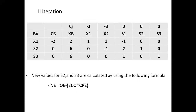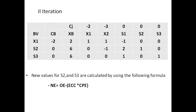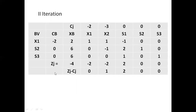For S2 and S3 rows, the formula used is: new element equals old element minus entering column coefficient times corresponding pivot element. After computing S2 and S3 row values, we perform the optimality check. The ZJ values for the second iteration are: minus 4, minus 2, 2, 2, 0, 0. Then we compute ZJ minus CJ.